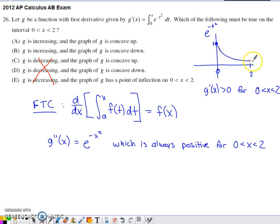It might be a really small positive, but it's always going to end up being positive. So we're looking at a situation where g prime is always positive and g double prime is always positive. Therefore, g has to be increasing and concave up.